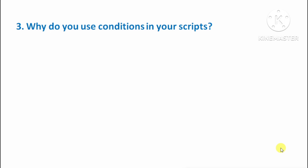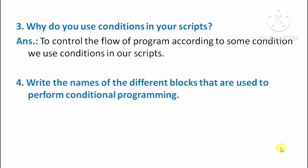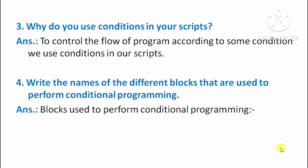Next question: Why do you use conditions in your scripts? We use conditions in our scripts to control the flow of execution. Next question: Write the names of different blocks used to perform conditional programming. Answer: The blocks used for conditional programming are: first, 'If Then', and second, 'If Then Else'.